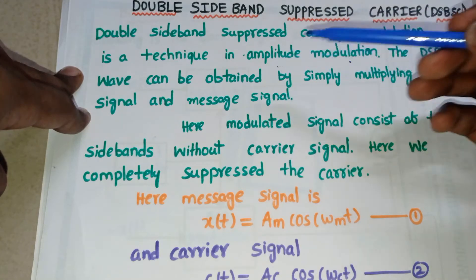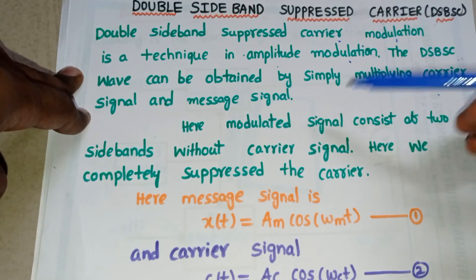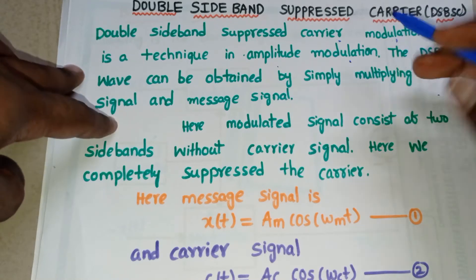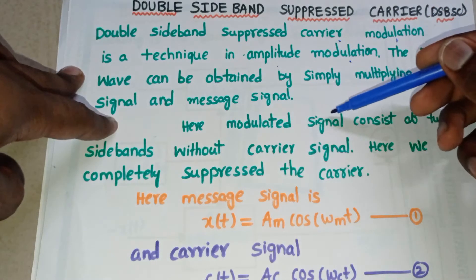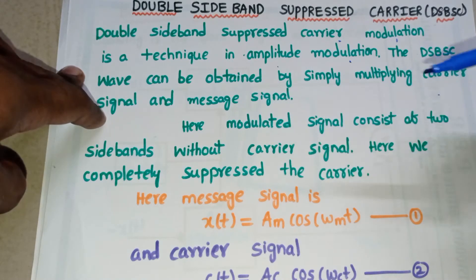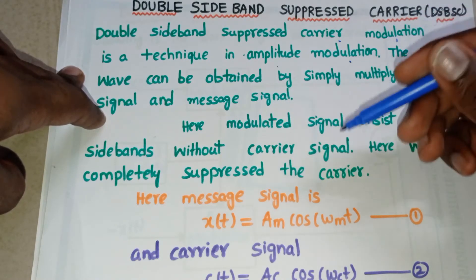How we can get the DSBSC wave? By simply multiplying the message signal and carrier signal, then we will get the DSBSC signal. The modulated signal consists of two sidebands without carrier. Remember this point, this is a very important point.